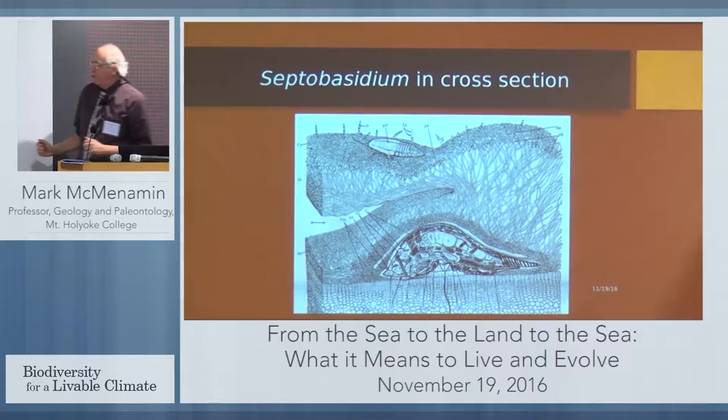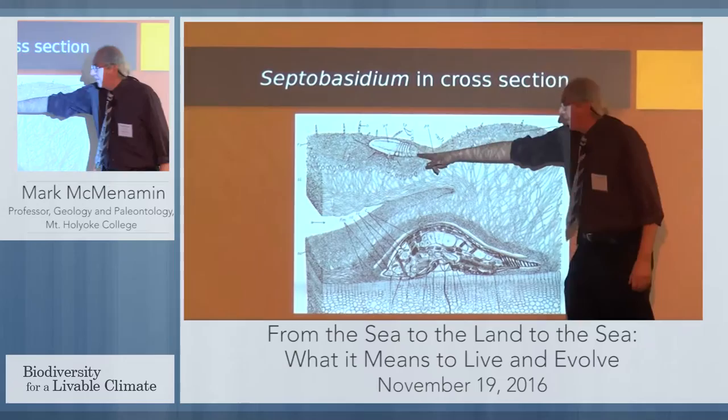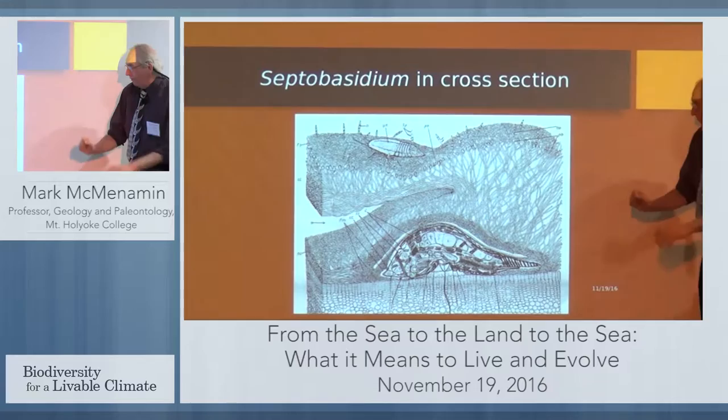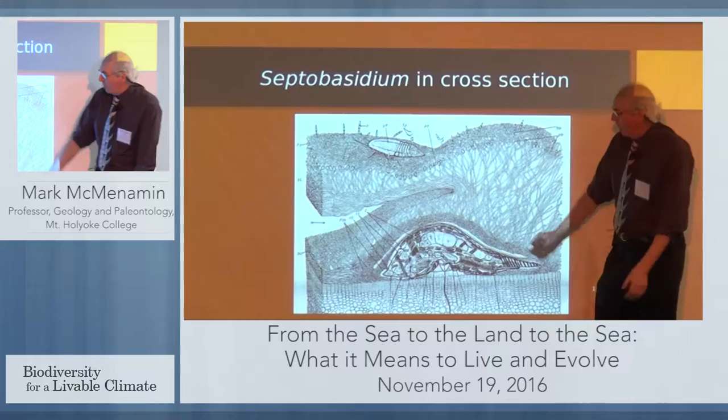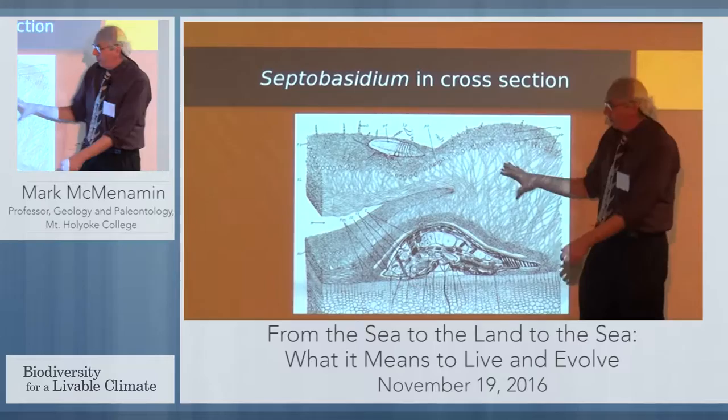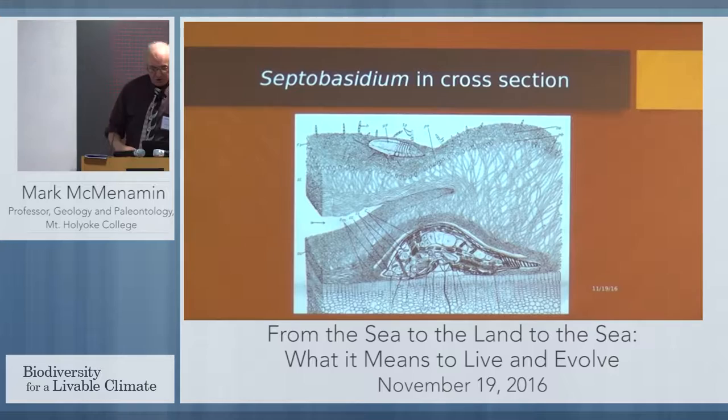Here we see the Septobisidium case in cross-section. Here is a juvenile of the scale insect — it almost looks like a trilobite. Here is the adult scale insect with its sectorial tube going down into the medullary ray cells of the vascular plant, drawing up nutritious fluid from the phloem. This nourishes the scale insect, but it is also intercepted by the coils of fungal hyphae that then nourish the Septobisidium fungus. So we have a very interesting nutrient exchange — a sort of a Hyper-C microcosm in this one case.